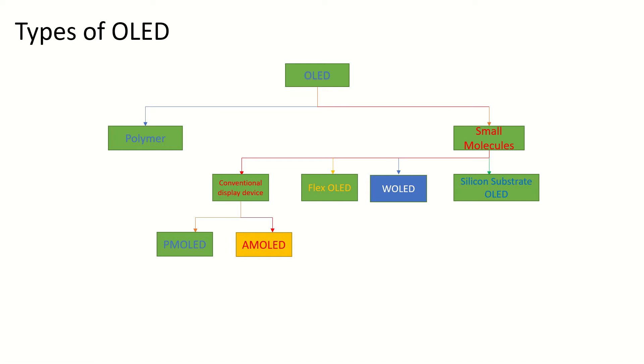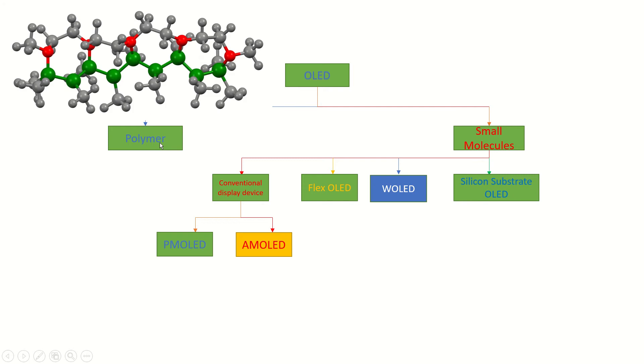Different types of OLED. OLED has two main families. The first one is polymer. The advantage of polymer is eligible for printing and film forming technology.